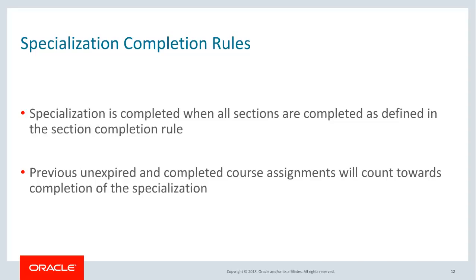A learner who has been assigned a specialization would need to complete all sections to complete the specialization. As seen previously, a section can have zero or all activities that need to be completed. When all sections are completed as defined in the section completion rule, the specialization is completed for the learner. If this specialization has courses which the learner has previously completed, the learner need not complete them again — such courses will be counted towards completion of the specialization.